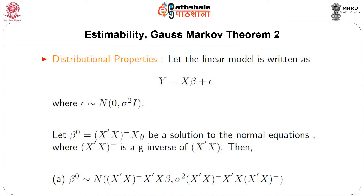Distributional properties. Let the linear model be written as y equal to X beta plus epsilon, where epsilon follows Normal(0, sigma-squared I). Here I is the identity matrix, which means that the epsilon_i's are actually i.i.d. Normal(0, sigma-squared).